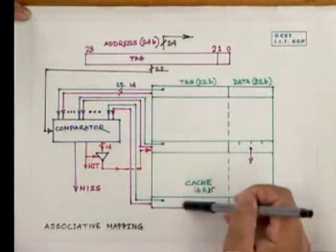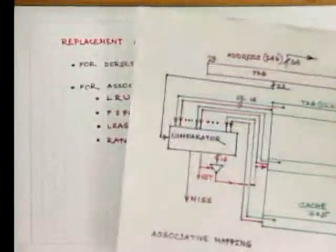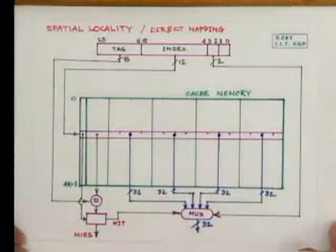This is associative mapping. Its advantage is that any block can come into any line. The disadvantage is that it is pretty costly. So far we have discussed temporal locality — if a particular block is accessed in main memory, chances are high it will be accessed again soon. We have not taken care of spatial locality, meaning if a block has been accessed, nearby blocks may also be accessed in a pretty short time. To take care of spatial locality, we can think of a new arrangement.